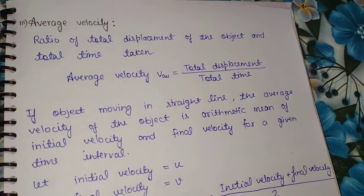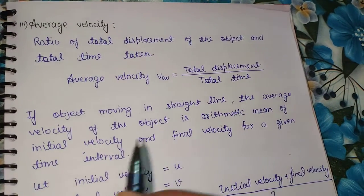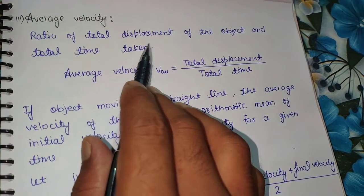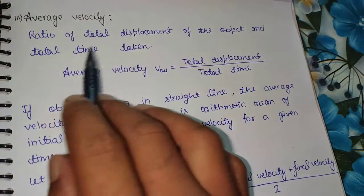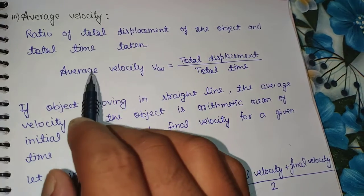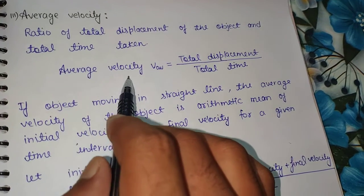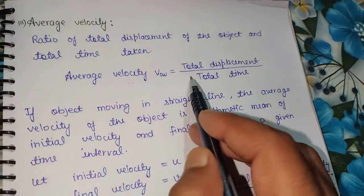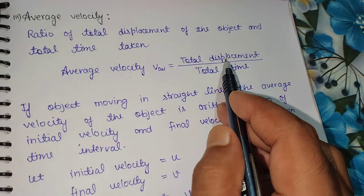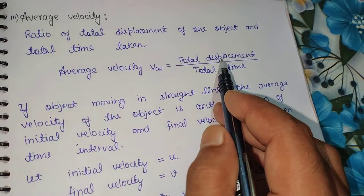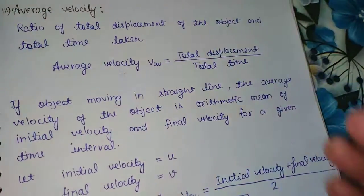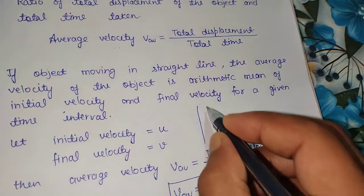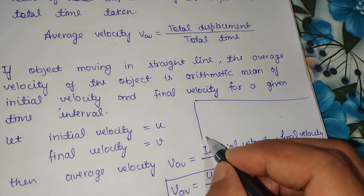The third and last type of velocity is average velocity. Average velocity means the ratio of total displacement of the object to the total time taken. To find the average velocity, you take the total displacement covered divided by the total time.